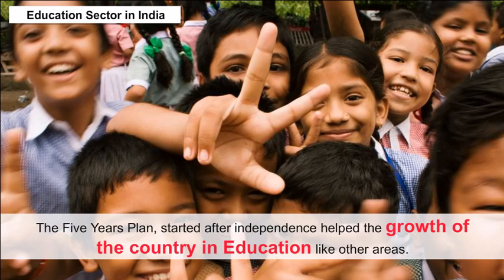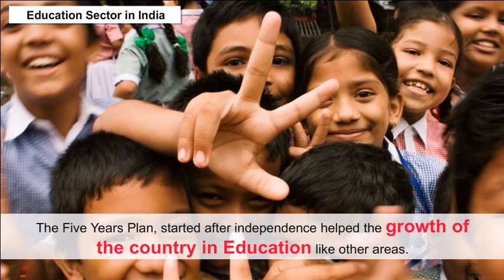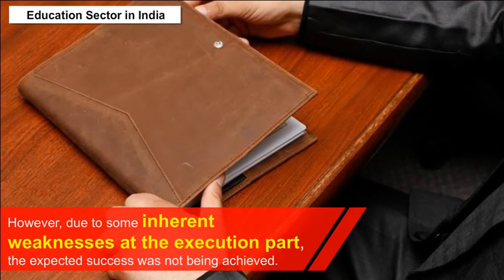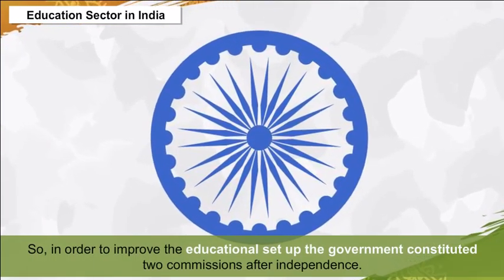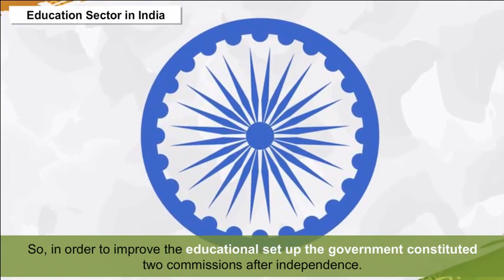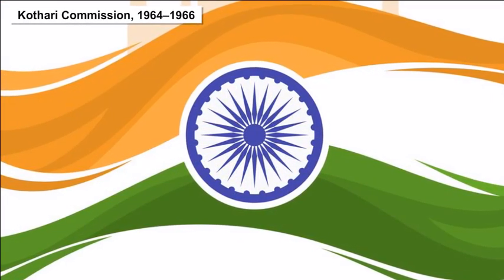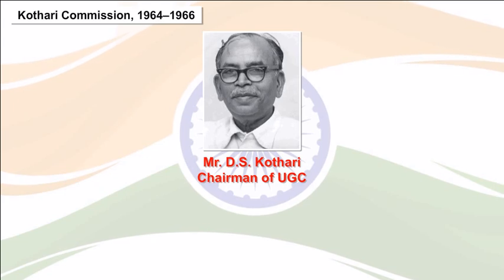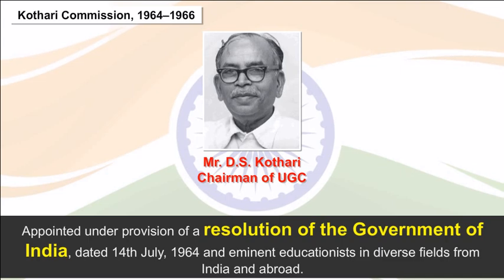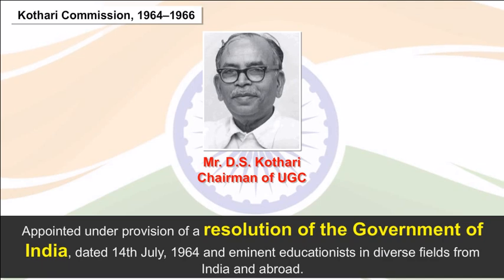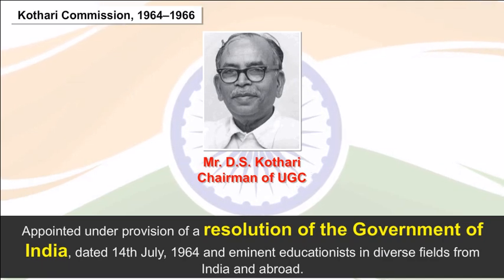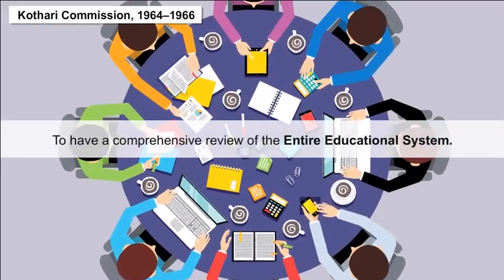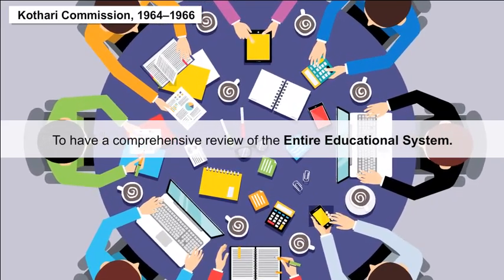The five-year plans started after independence helped growth in education, among other areas. However, due to some inherent weaknesses in execution, the expected success was not being achieved. To improve the educational setup, the government constituted two commissions after independence. The Kothari Commission (1964–1966), chaired by Mr. D.S. Kothari, then Chairman of UGC, was appointed by a resolution of the Government of India dated 14 July 1964, comprising eminent educationists from India and abroad. This commission was tasked with a comprehensive review of the entire educational system, not limited to specific sectors.